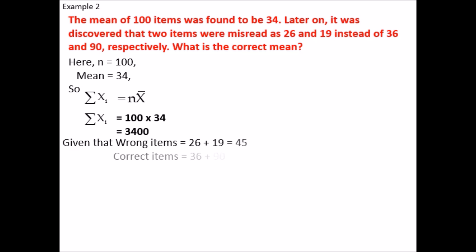Correct items = 36 + 90 = 126. So, Correct sum = 3400 - 45 + 126 = 3481. Correct mean = 3481 / 100 = 34.81.